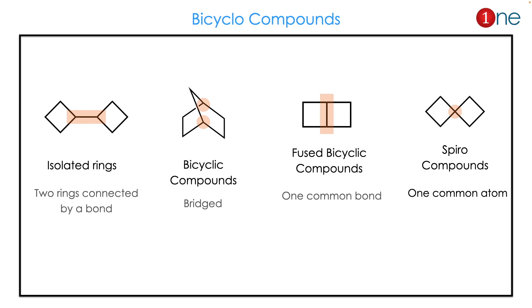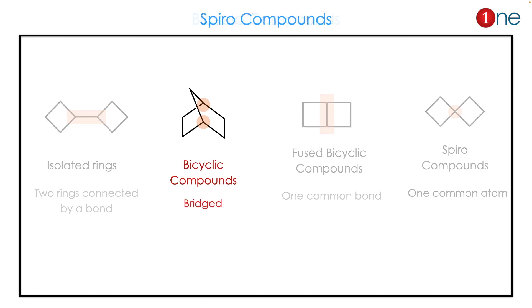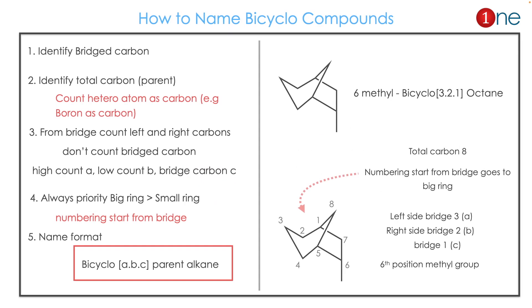What is a bicyclo compound? There are different kinds of bicyclo compounds. Among them we will see the bridged one. Other systems include isolated rings, fused rings where two rings are fused together, and spiro where a single carbon connects two rings. Our sole interest here is bicyclic compounds with bridged carbons.